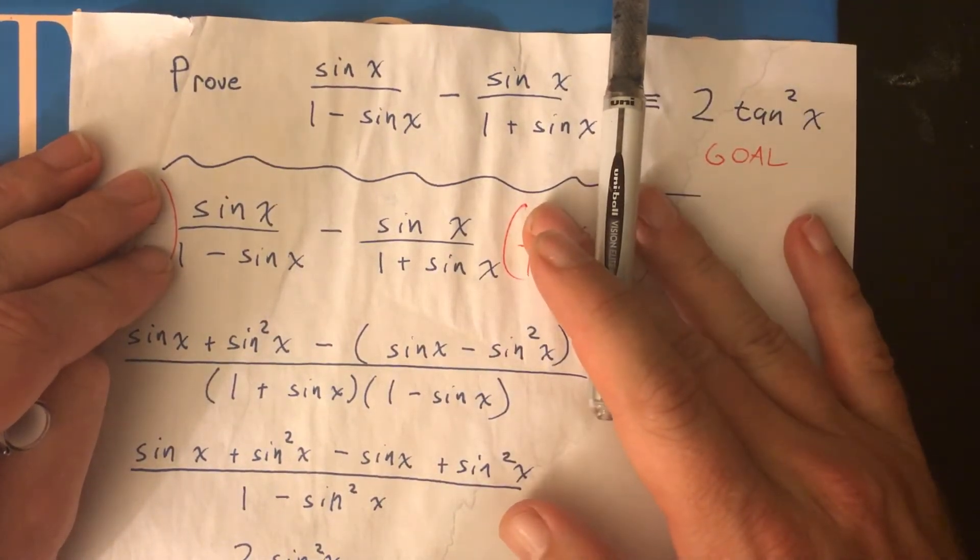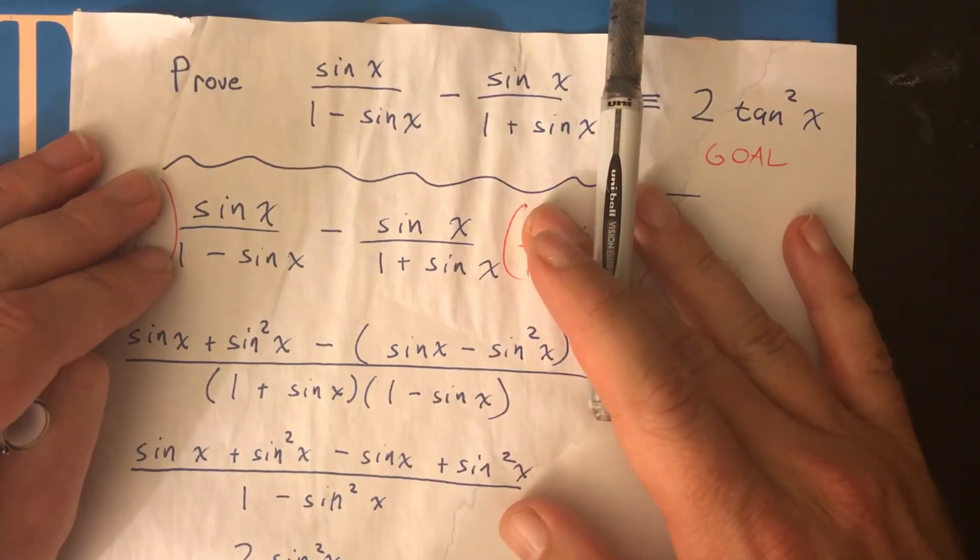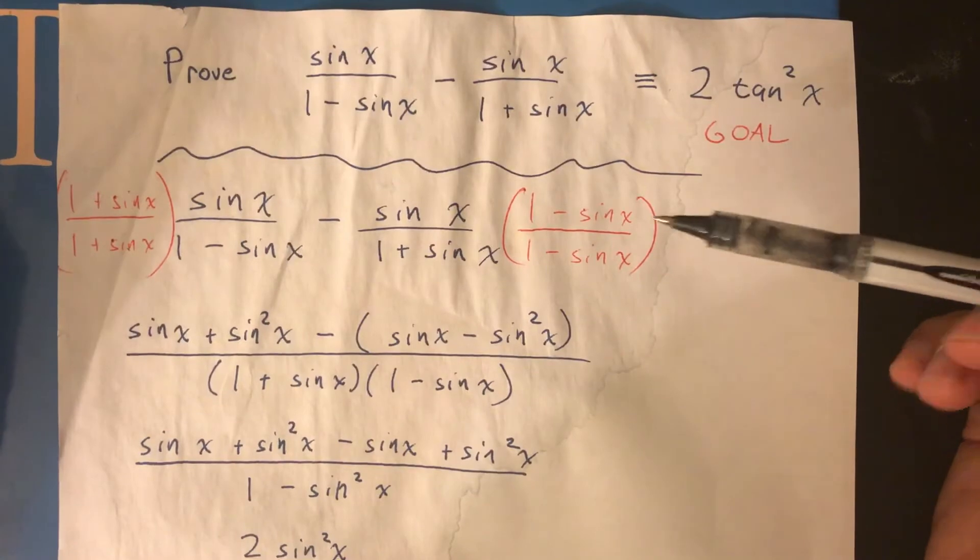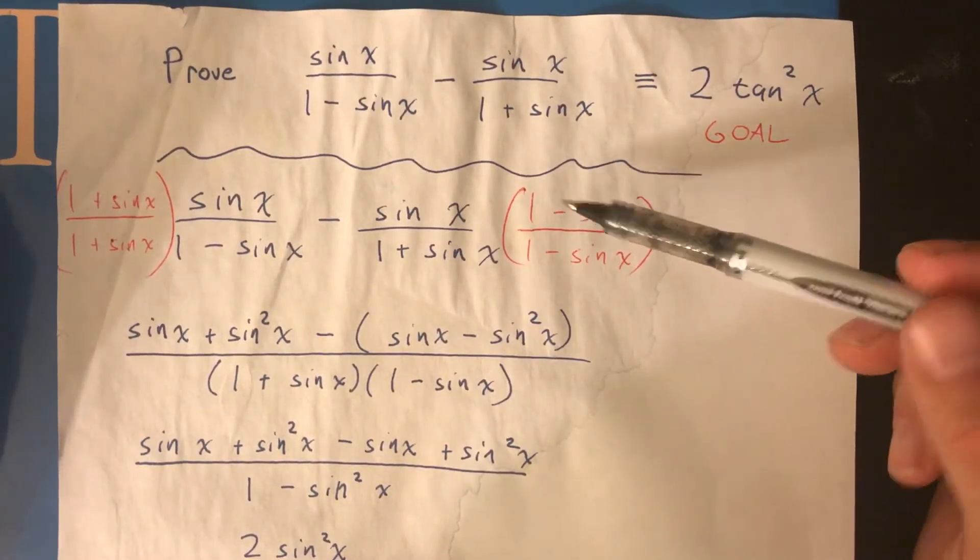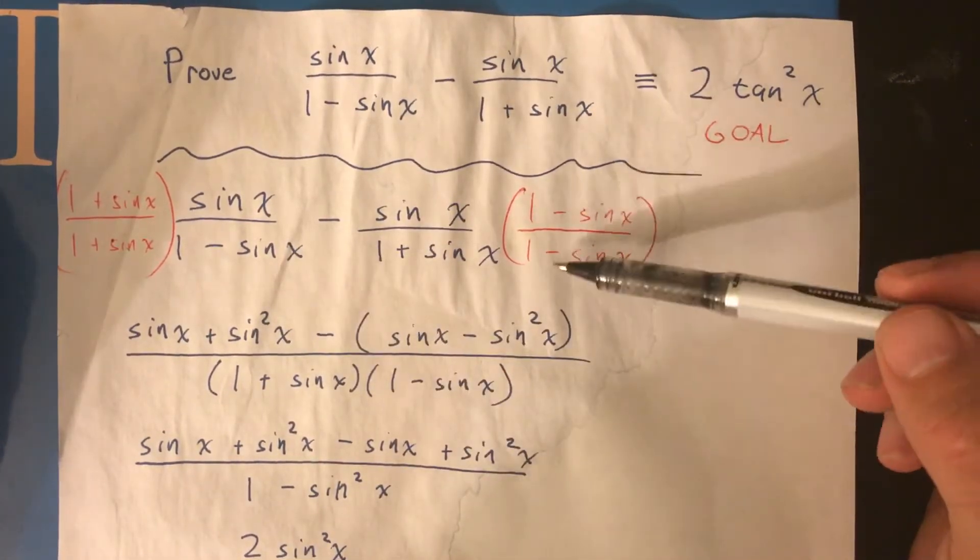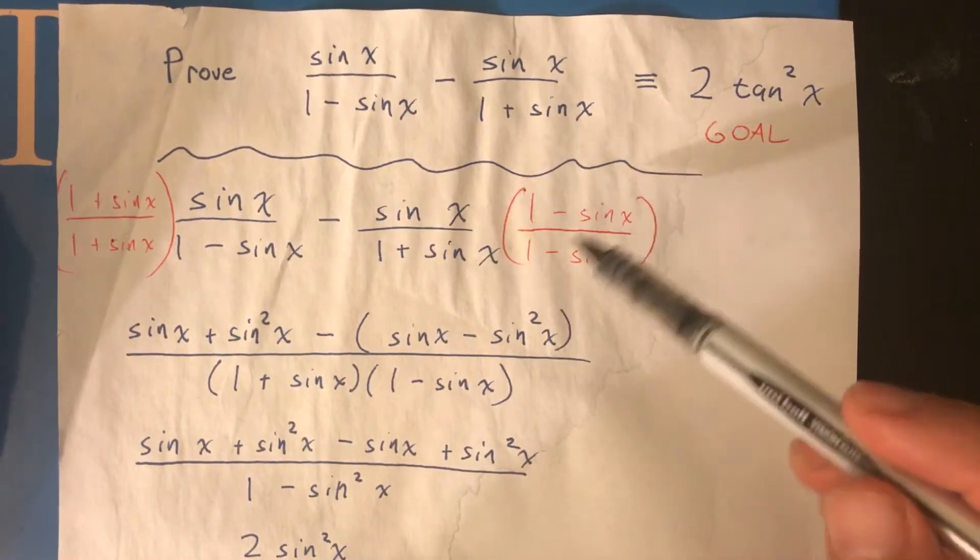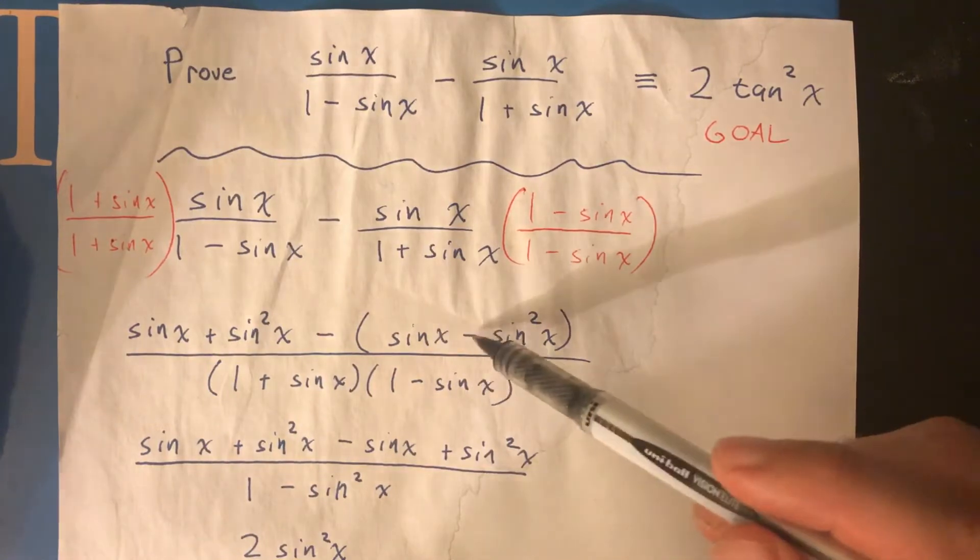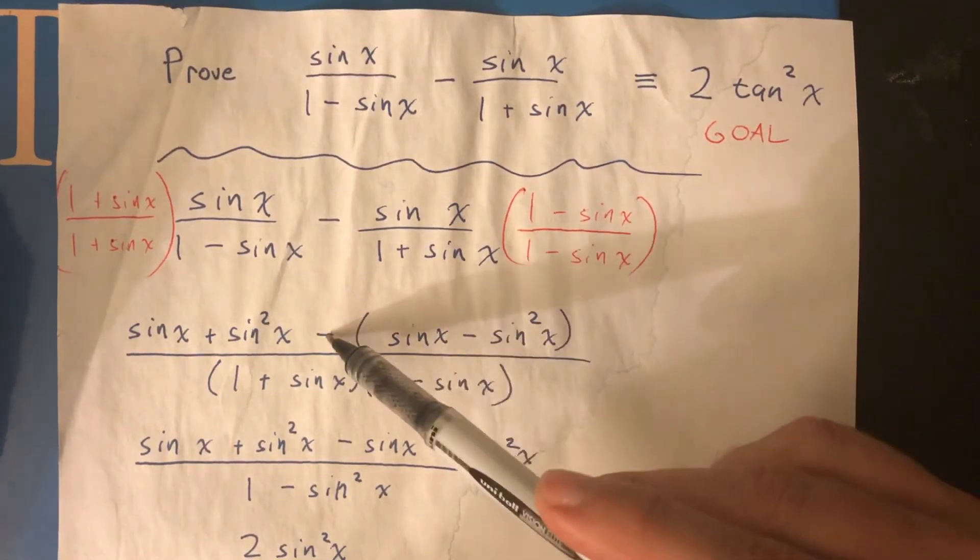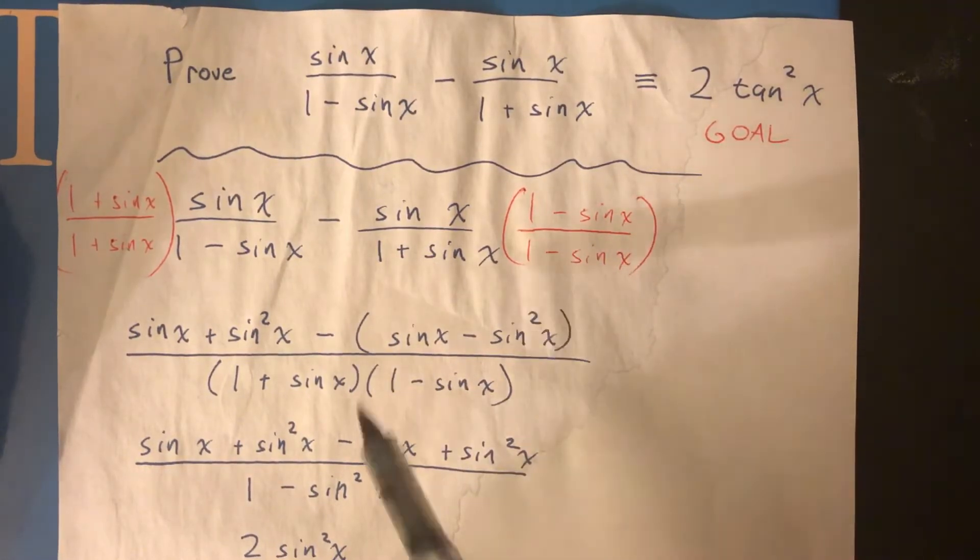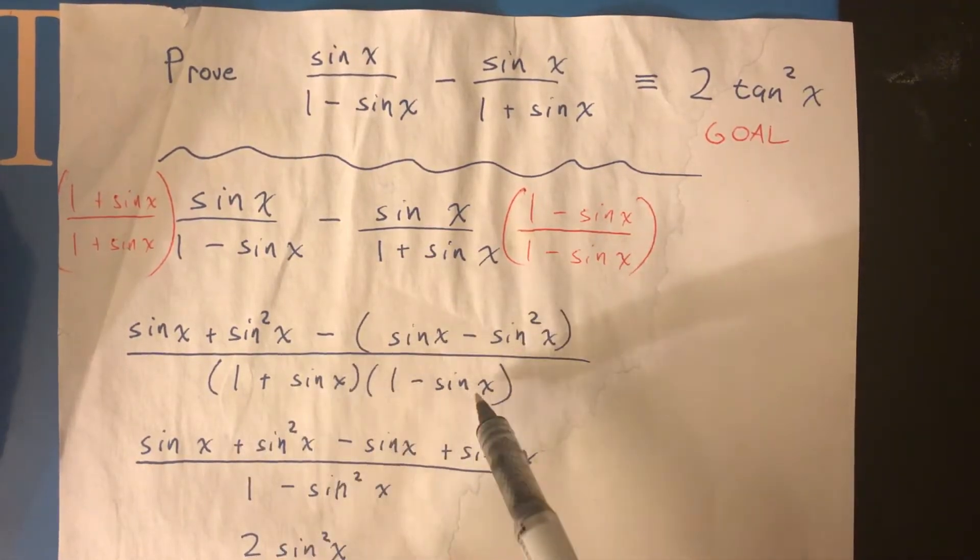So I said, hmm, what can I do here? I see two fractions, let's combine the fractions. Let's get the denominators the same, so we'll multiply by 1 in the form of 1 minus sine x and 1 plus sine x on both sides. When you distribute the sine x up top, it becomes sine x minus sine squared x. Notice I use parentheses, so we distribute the negative. The bottom changes to 1 plus sine x, 1 minus sine x.